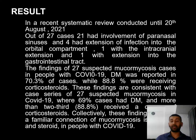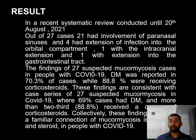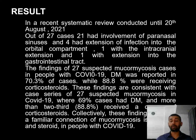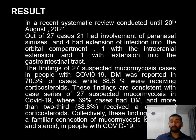Results: In a recent systemic review conducted until 20 August 2021, out of 27 cases, 21 had involvement of the paranasal sinuses and 4 had extension of infection into the orbital compartment, one with intracranial extension, and one with extension into the gastrointestinal tract. Among 27 suspected mucormycosis cases in people with COVID-19, diabetes mellitus was reported in 70.3% of cases while 88.8% were receiving corticosteroids. These findings are consistent with the case series of 27 suspected mucormycosis in COVID-19, where 69% had diabetes mellitus and more than two-thirds received a corticosteroid. Collectively, these findings highlight the familiar connection of mucormycosis and corticosteroid use in patients with COVID-19.